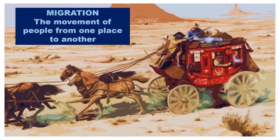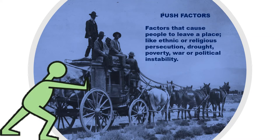Migration is the movement of people from one place to another. The 19th century saw a great migration to the western part of the United States. But why were people migrating? Sometimes migration is based on push factors — these are factors that cause people to leave a place, like ethnic or religious persecution, drought, poverty, war, or political instability.